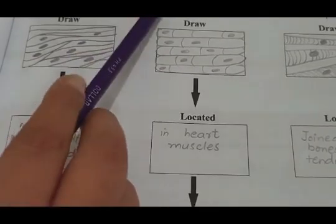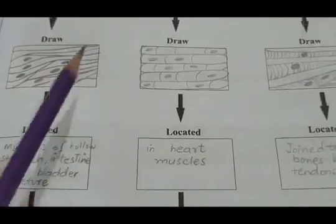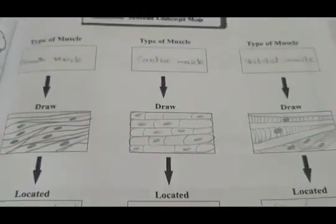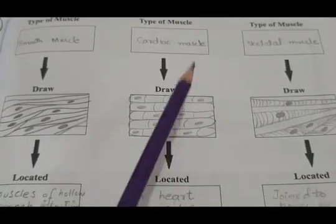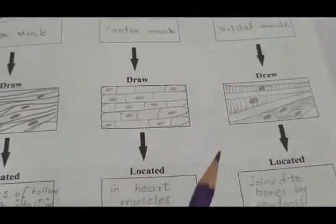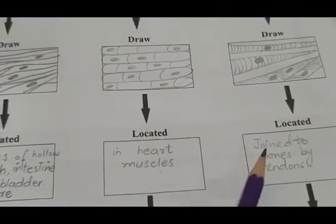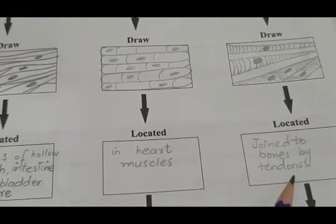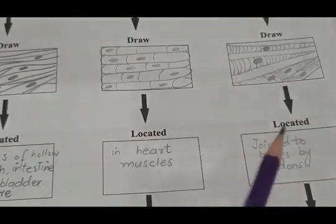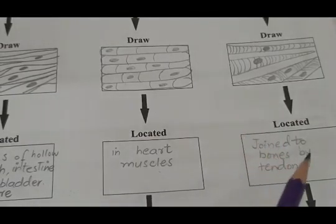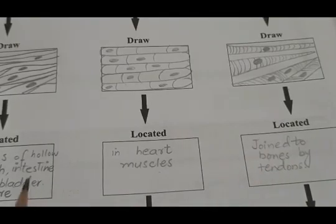Cardiac muscles are located in your heart. After that, skeletal muscles are present in your skeleton — they are joined to bones by means of tendons and help to support the body.